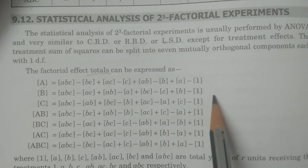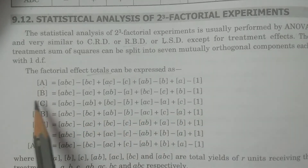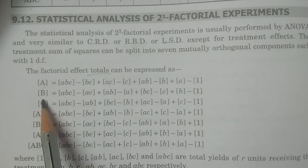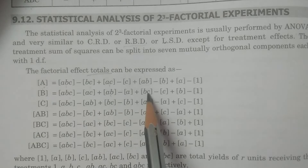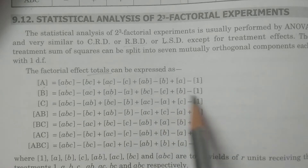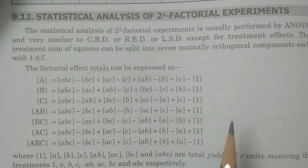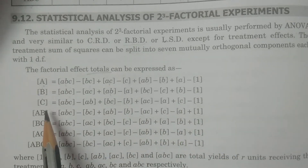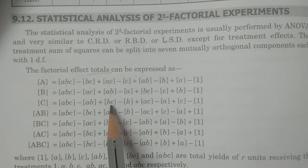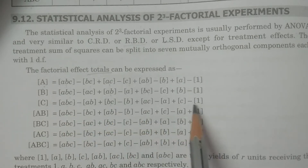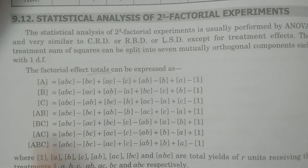This is the order for writing the original formula. For total [B], the combinations ABC, AB, BC, and B have positive signs; remaining are negative. Similarly for [C]: combinations ABC, BC, AC, and C have positive signs; remaining are negative.